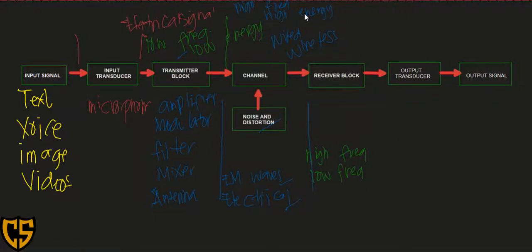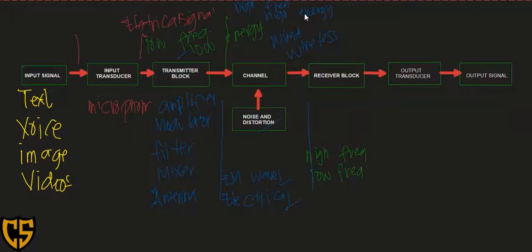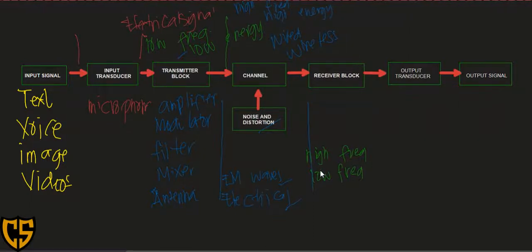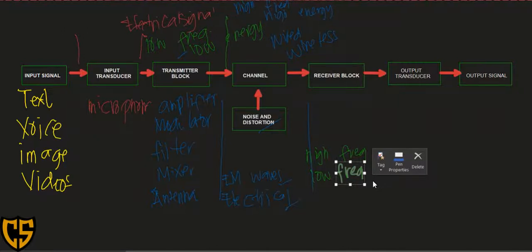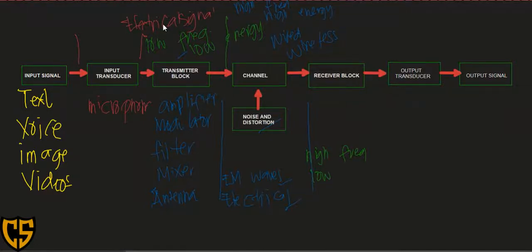To summarize the signal properties: from the input transducer, the signal is low frequency and low energy. After passing through the transmitter block — where it is amplified and modulated — it becomes high frequency and high energy. As it passes through the channel and arrives at the receiver, it remains high frequency but is now low energy.